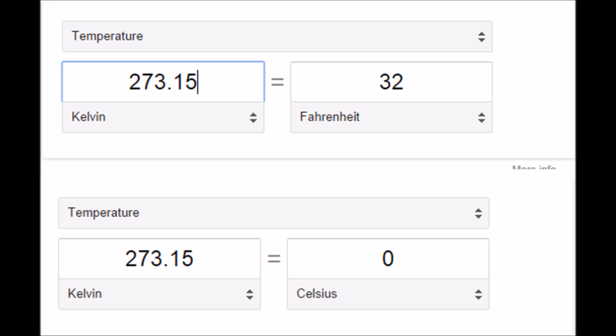Now that we're all pumped up, let me set a few ground rules before I start. I will be using the units called Kelvin for temperature. For reference, 273.15 Kelvin is equal to 32 degrees Fahrenheit and zero degrees Celsius.